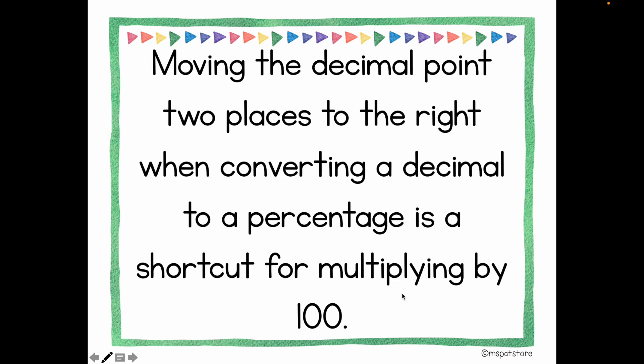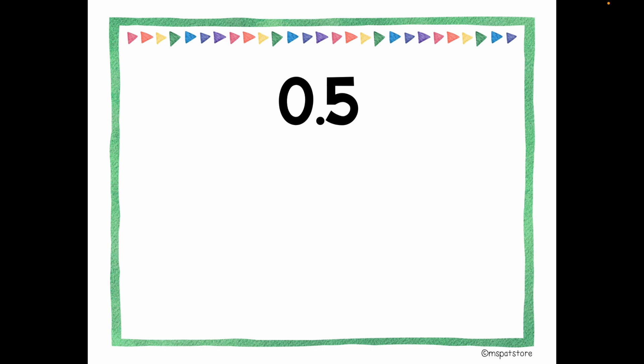Basically, moving the decimal point two places to the right when converting a decimal to a percentage is a shortcut for multiplying by a hundred. Now pause the video and try to rewrite this decimal as a percent. Let's shift the decimal point two spaces to the right: one and two. I'll place my invisible zero here. This makes 50 percent.